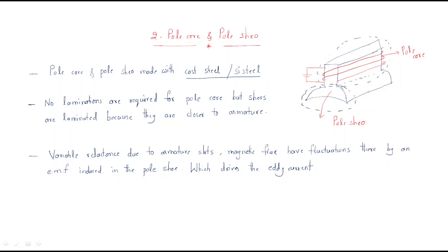It is called the pole shoe because it looks like a shoe. It is the pole core because it has field windings wound around it. These are useful for maintaining and defining the poles. The pole core and pole shoe are both made with cast steel or silicon steel — both are the same material.